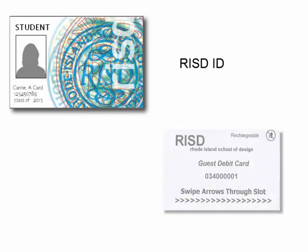To use the print system, you must have funds on your RISD ID card or on a RISD Guest Debit Card. You'll also need to know the last seven digits of the ID number on the front of the cards.